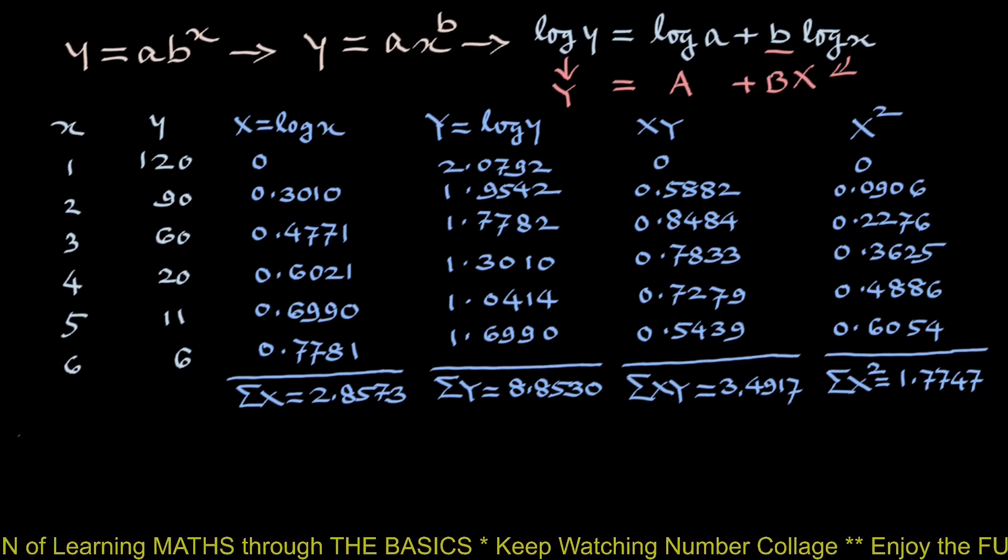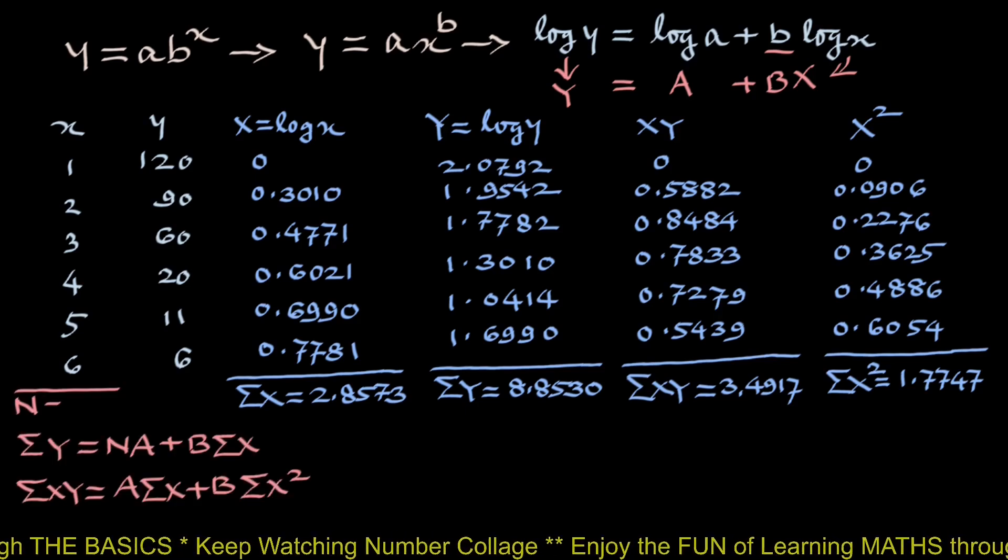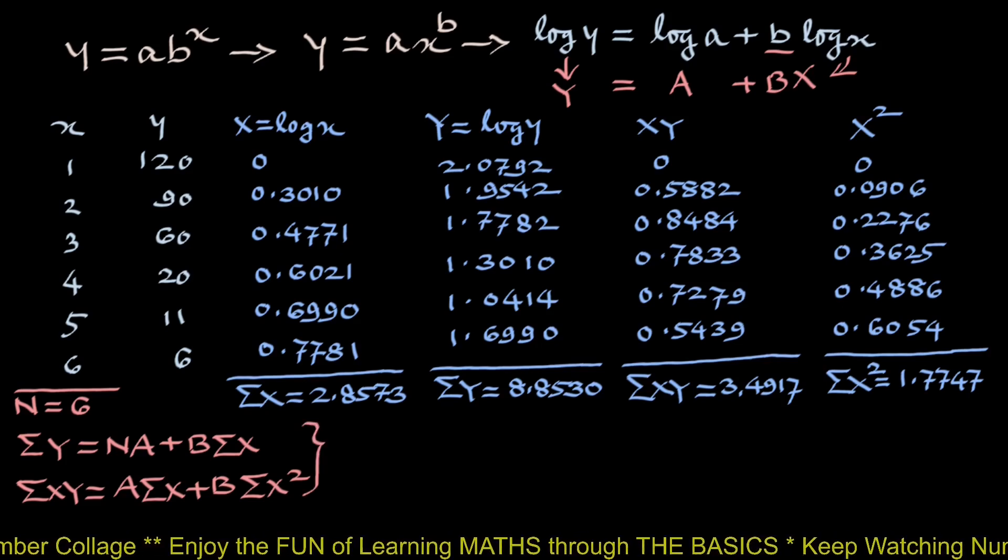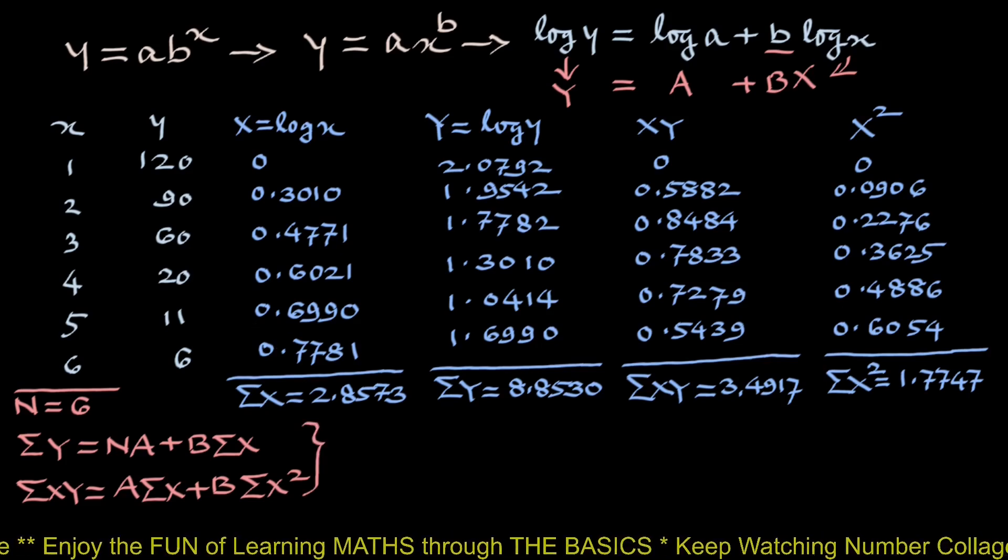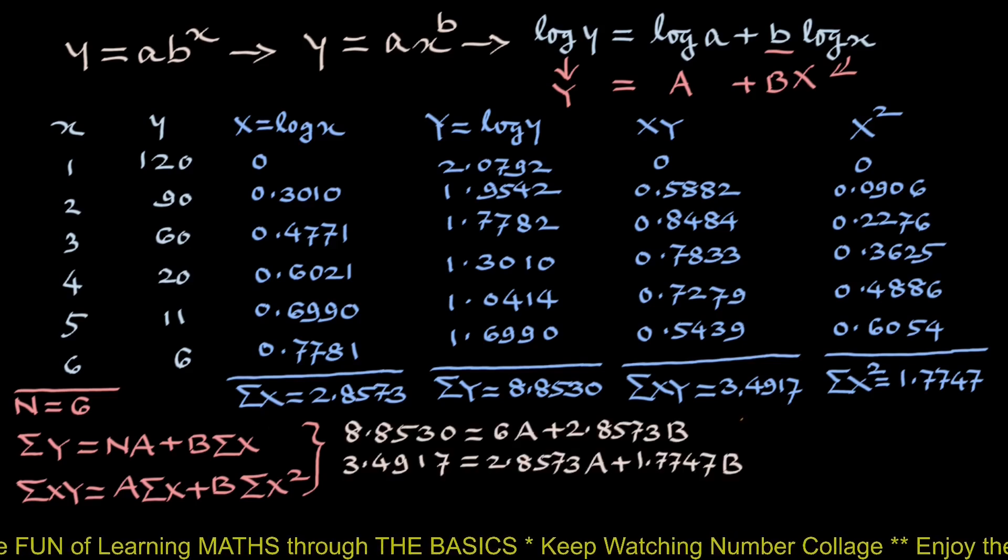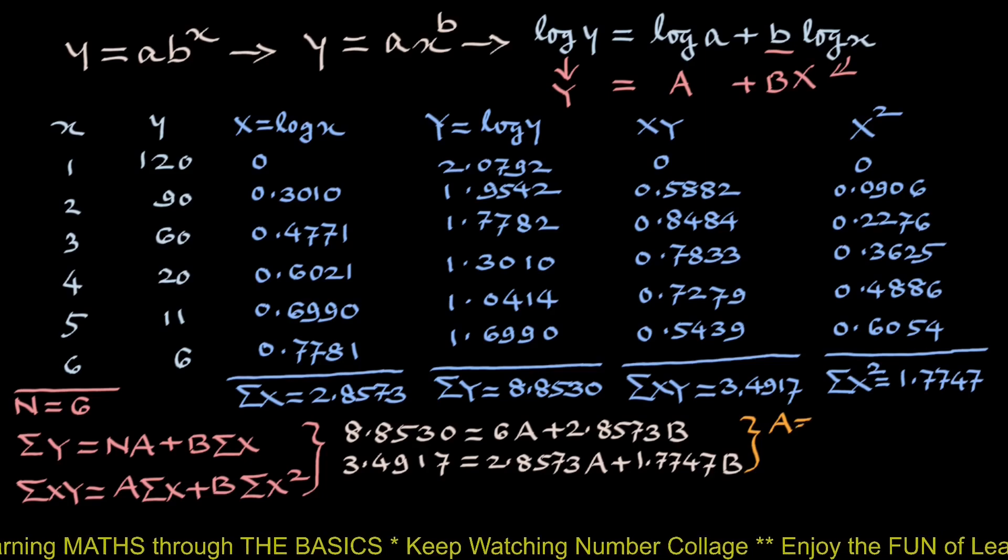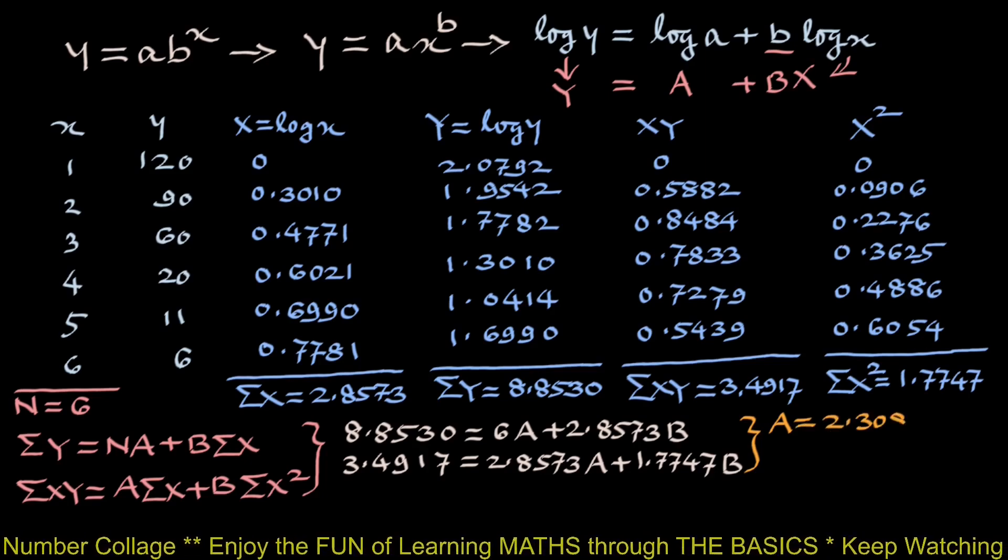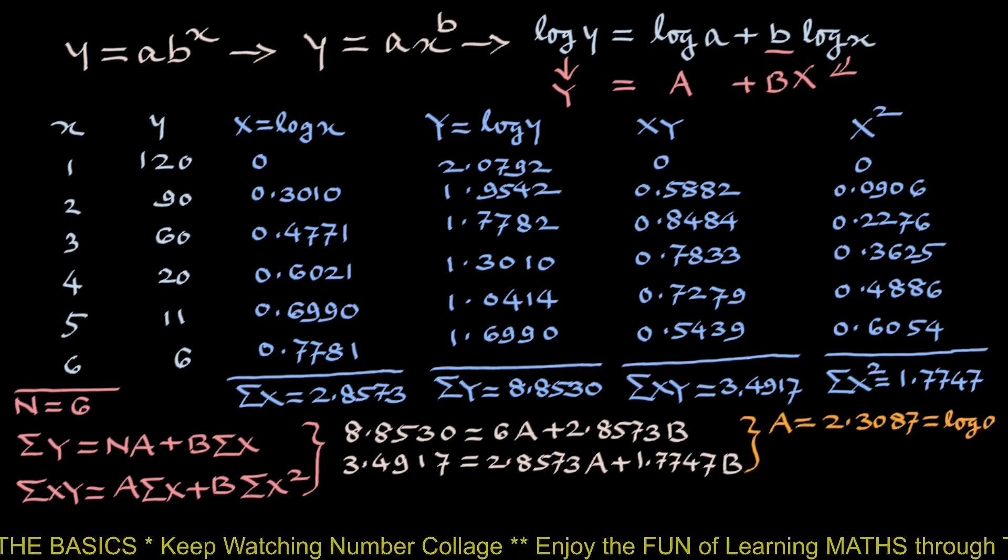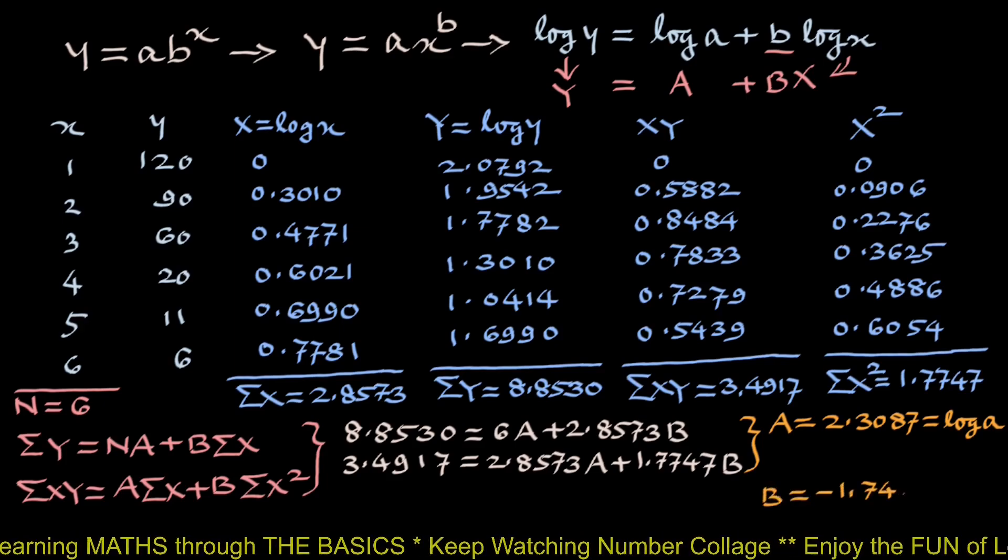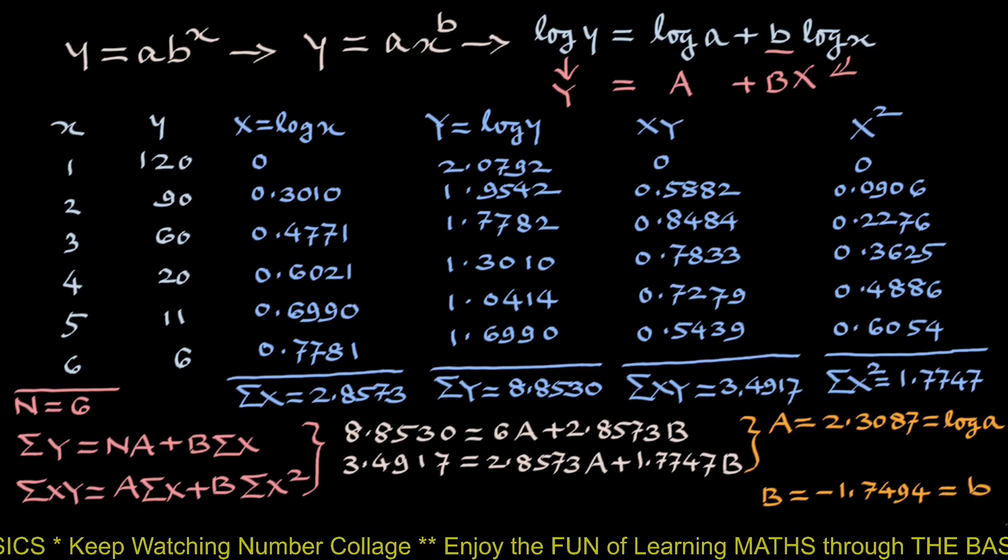Using normal equations where n is number of observations 6. By using the values obtained in the table, we get two linear equations. By solving them simultaneously, we get A equals 2.3087 which is log small a and B equals minus 1.7494 which is small b.